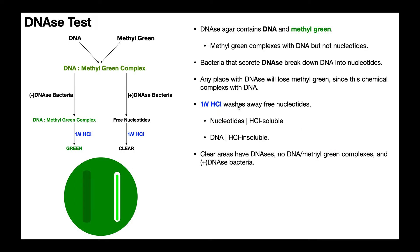Now let's think about what will happen in the case of a DNase-negative versus DNase-positive bacteria. If it's negative for DNase, meaning it doesn't have the enzyme, that bacteria will not be able to break down DNA. For a DNase-negative bacteria, the DNA will still be on the agar plate and the methyl green will still be complexed with it. So you can expect for a DNase-negative bacteria you're just going to see green — none of it will be cleared because the bacteria can't break down the DNA.